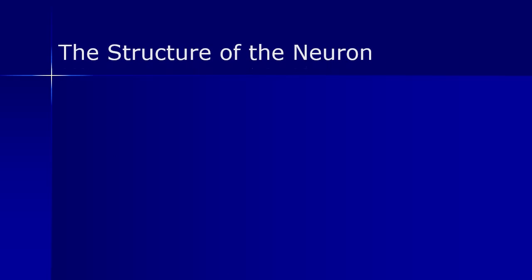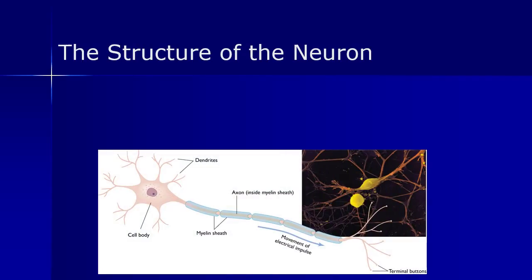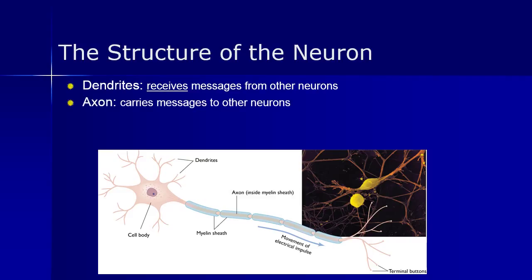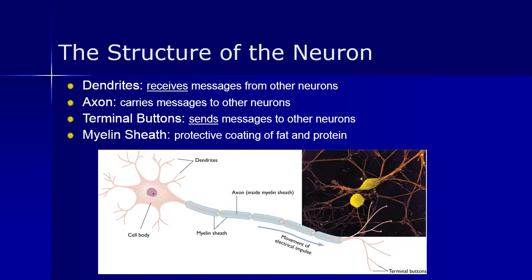The basic structure of the neuron comprises four major components: the dendrites, which receive messages from other neurons; the axon, which carries messages down its length to other neurons; the terminal buttons, which send messages to other neurons whose dendrites receive them; and the myelin sheath, a coating of fat and protein that protects the cell. When that protective sheath gets compromised or damaged, diseases like MS can occur.